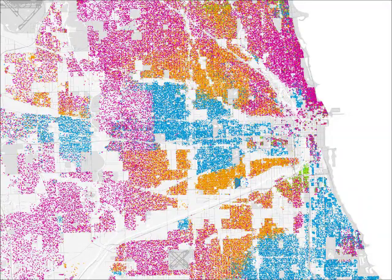By using dots instead of solid colors, my map immediately challenges the idea that neighborhoods are homogenous areas with sharp boundaries. My map highlights diversity instead of majority rule, but this means that it also highlights segregation in a much more powerful way. Using dots makes it possible to ask what kinds of transitions actually exist in the city instead of making assumptions about clean edges.